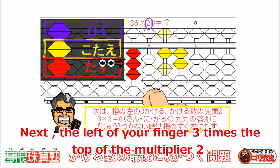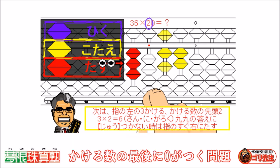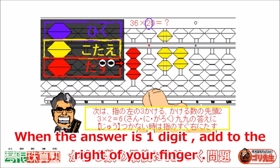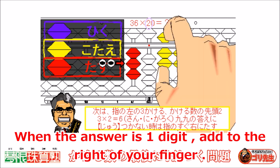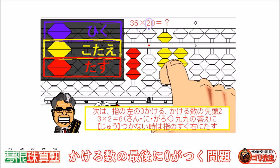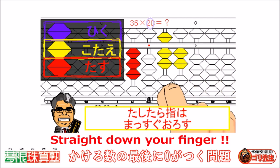Next, the left of your finger — three times the top of the multiplier, two. Three times two equals six. When the answer is one digit, add to the right of your finger. Straight down your finger.